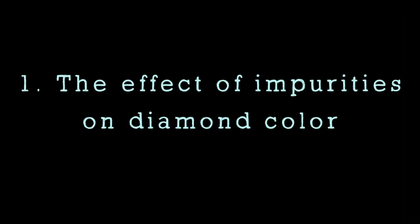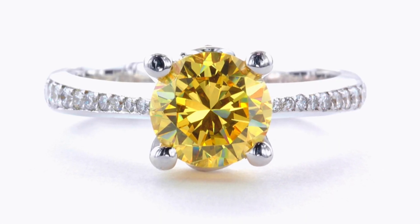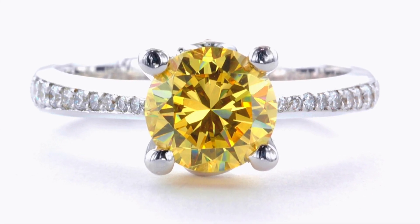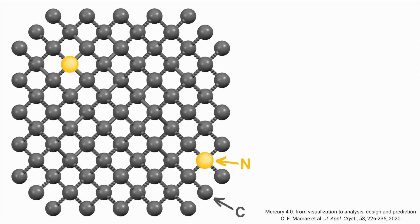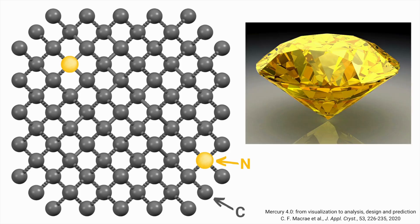First, we'll look at the diamonds whose color is caused by the presence of impurities in the diamond structure. We'll start with the fancy yellow diamonds. Diamonds have a yellow color when there are nitrogen atoms present in the diamond crystal structure. When the high pressures and temperatures brought the carbon atoms together, some nitrogen atoms were trapped in the diamond crystal structure. It's those nitrogen impurities that took the place of carbon atoms in the crystal structure that lead to the yellow color of diamonds.